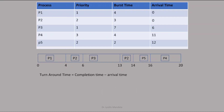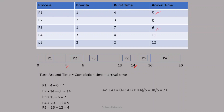Turnaround time is completion time minus arrival time. P1 completion time is 4 minus arrival time 0 equals 4. P2 completion time is 14 minus arrival time 0 equals 14. P3 completion time is 13 minus arrival time 6 equals 7. Similarly for P4 and P5. The average turnaround time is 7.6.